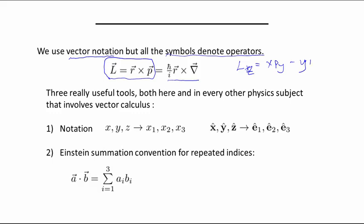L_Z is equal to X P_Y minus Y P_X, and then there's an L_Y and an L_X as well. But these are now to be interpreted in terms of the quantum mechanical operators.